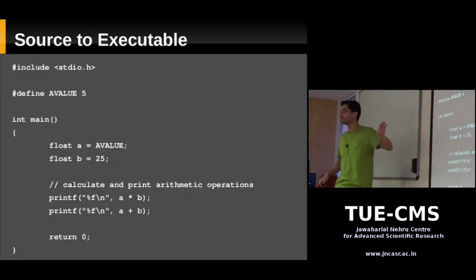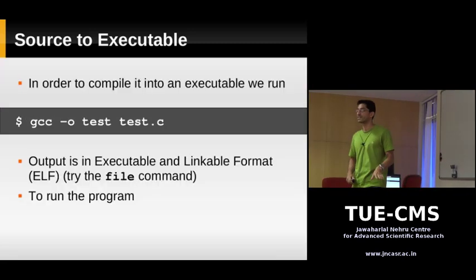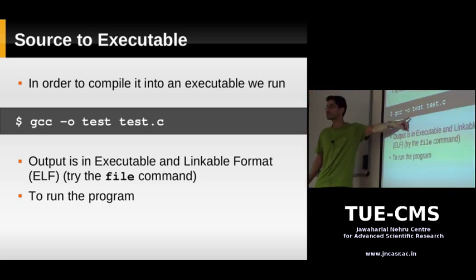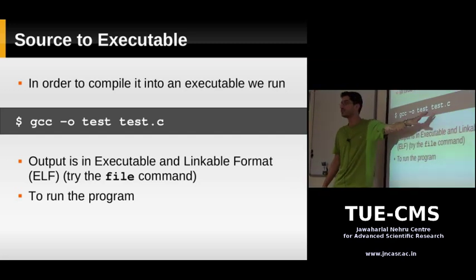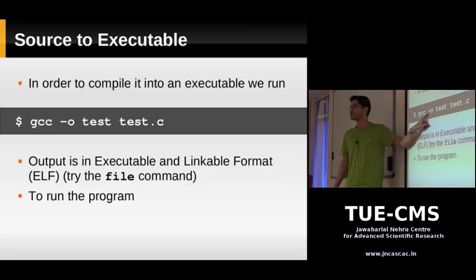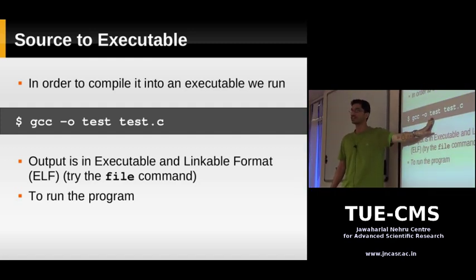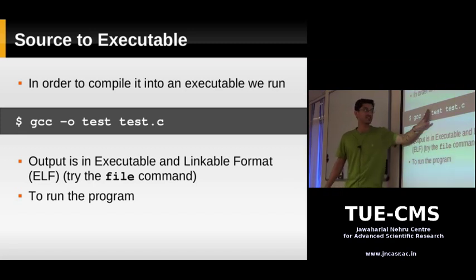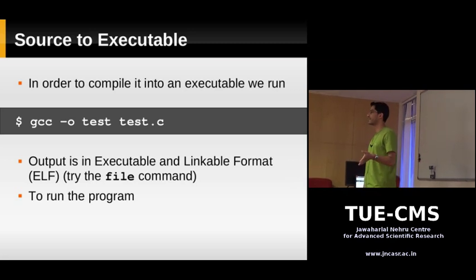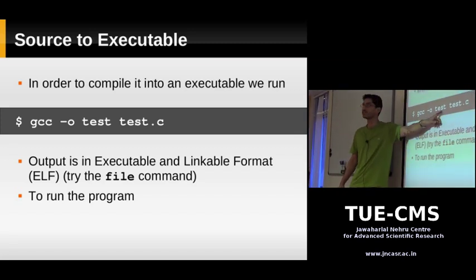Before going into preprocessing, let me show you how you compile this program. If you want to compile this program into an executable on Linux, you give this command: gcc -o test and the source code file. Our source file is named test.c. The -o option to gcc tells what the name of the output file should be, so the output executable will be named test. If you don't supply the -o option, gcc will choose a default name for your executable.